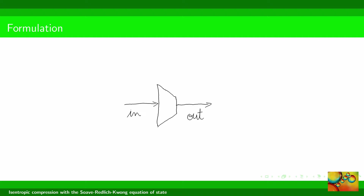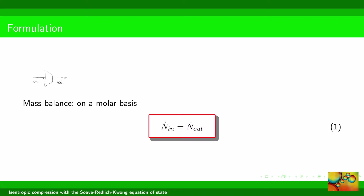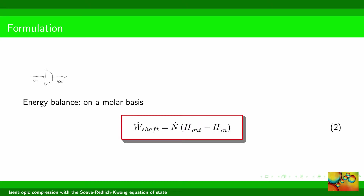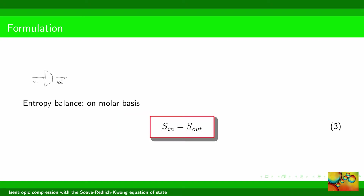The compressor has a single input stream and a single output stream. If you are unfamiliar with the solution of similar problems, you may wish to watch our video, Isentropic Compression, which explains how to start from generalized forms of the mass, energy and entropy balances and simplify them to situations with a single input and a single output stream, as is the case here. The outcome is that the molar flow rate into and from the compressor are equal. The shaft power depends on the molar enthalpy difference between the output and input streams and on the molar flow rate. From the entropy balance, the conclusion is that the process is isentropic.